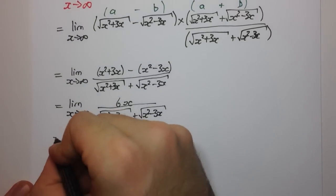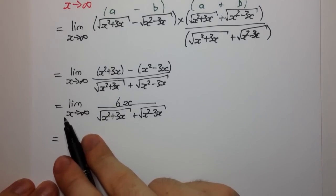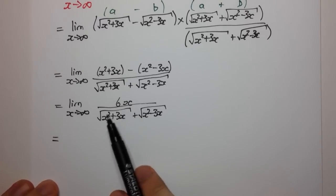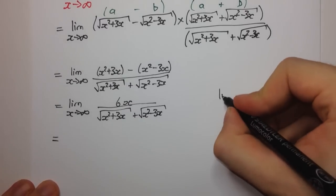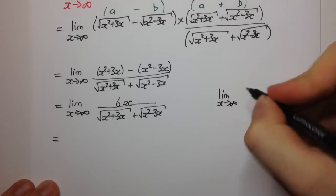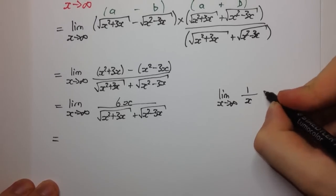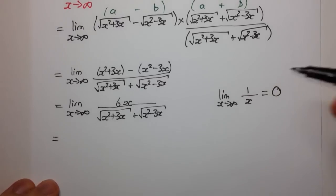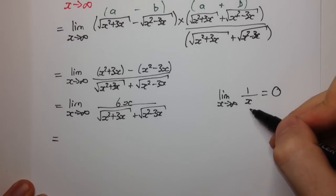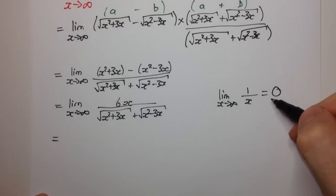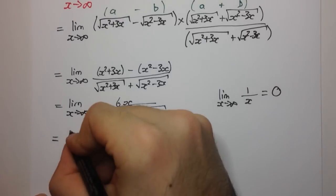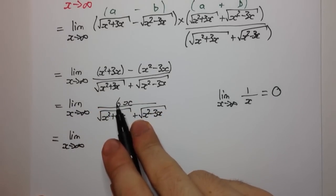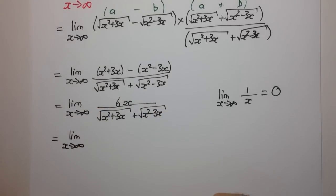Now, when we have limits as x approaches infinity, usually we try to get our fractions because we can apply the rule that 1 over x equals 0. Because even though we can't substitute infinity in, we can think of it as 1 over an extremely large, arbitrarily large number, which is going to be equal to 0. So let's divide the numerator and the denominator by x.